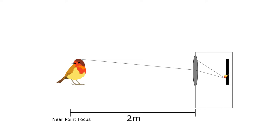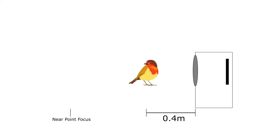We want to move the bird closer. So we move the camera so that it's 0.4 meters away from the bird. Now the image is larger, but the light is focusing to a point beyond the sensor. So the image is out of focus.